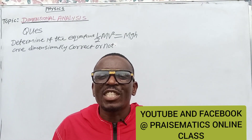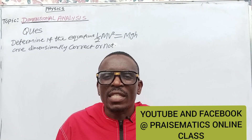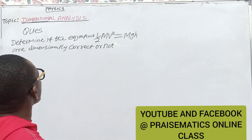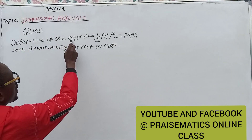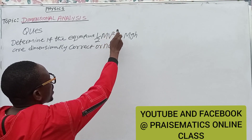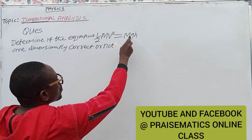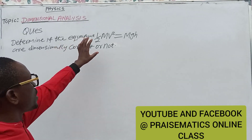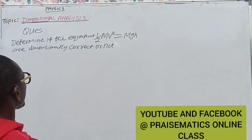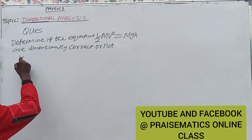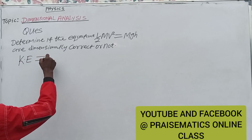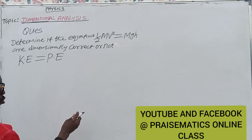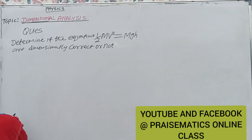Hello friends, welcome to Prismatics Online Class. In today's class we are looking at dimensional analysis. The question on the board says: determine if the equation 1/2 mv² = mgh is dimensionally correct or not. We are going to check whether this is equal to this — this is just like kinetic energy is equal to potential energy, and that is what we want to check.